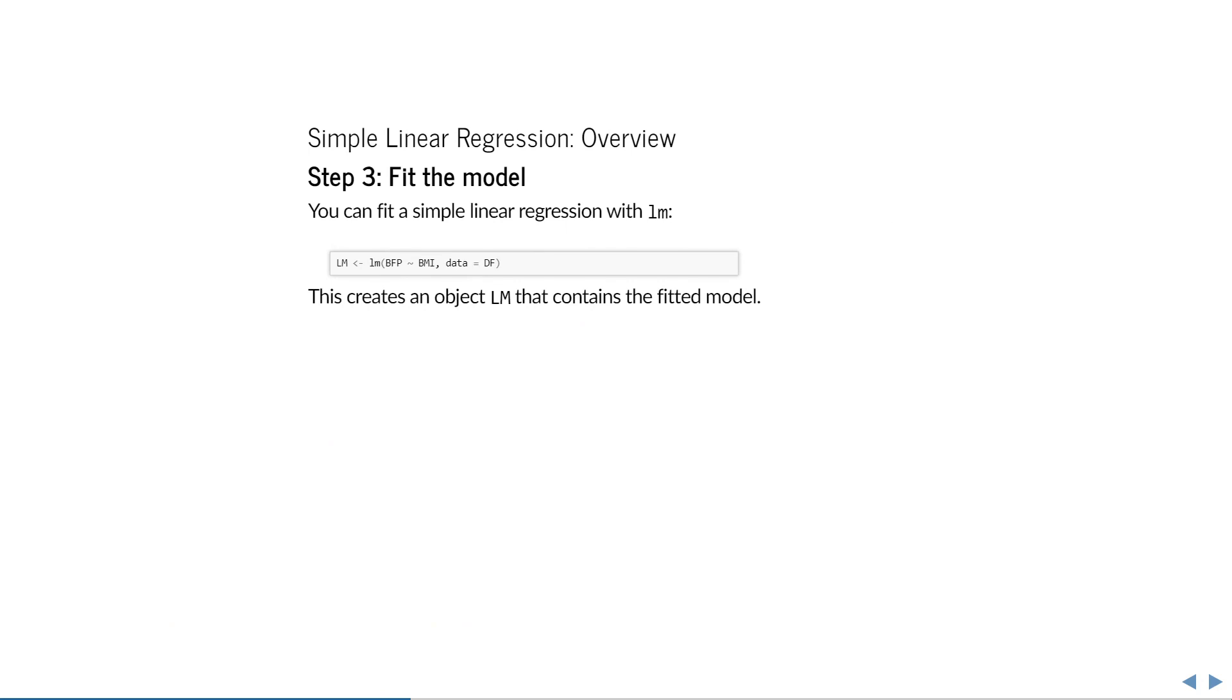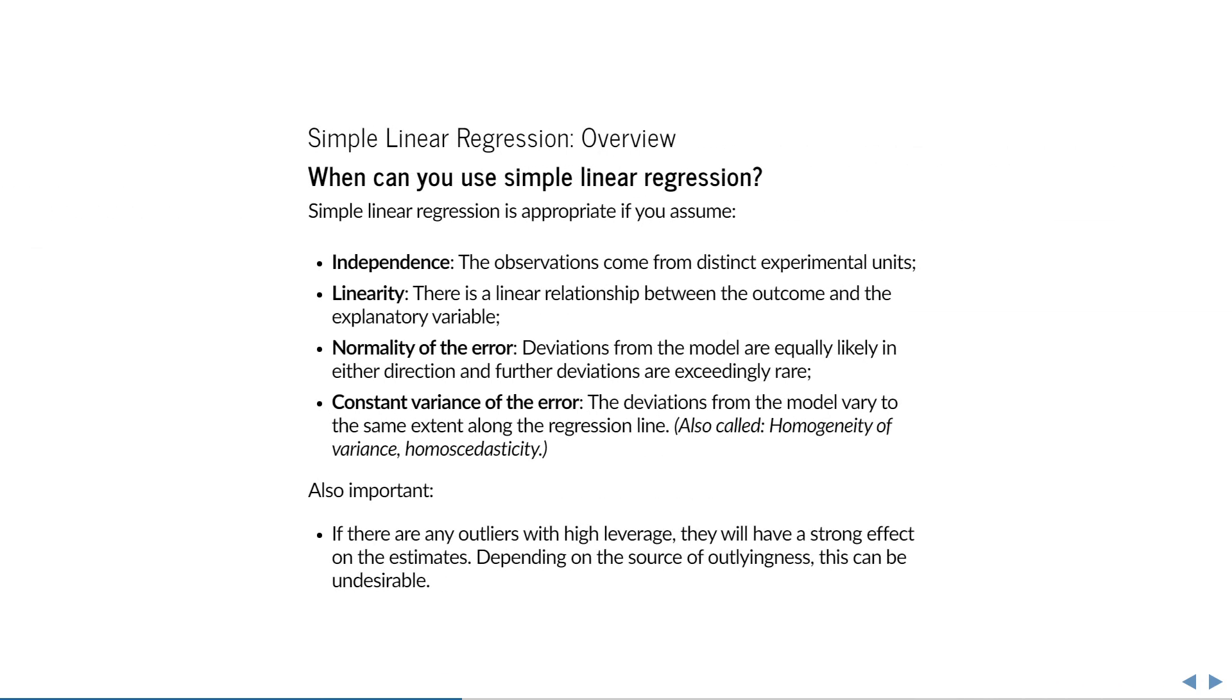The third step is to actually fit the model. For this we're going to use the base R function called LM. Here I have created an object called capital LM by making a call to the LM function with body fat percentage as the response variable and BMI as the explanatory variable. The last argument tells R where to find these variables, namely in the data frame we just created. Before we use this model for any kind of inference though, we have to consider its assumptions.